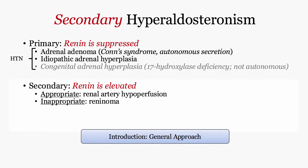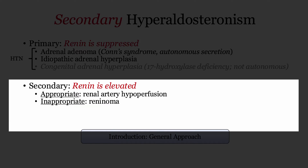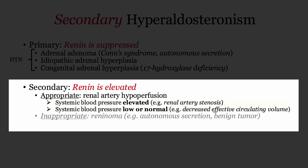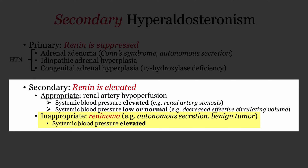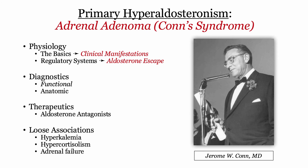Insofar as secondary etiologies, you can distinguish the two by considering whether the renin secretion is appropriate or inappropriate. Appropriate refers to renin release that occurs secondary to renal hypoperfusion, as in renal artery stenosis, or decreased effective circulating volume, and these are distinguished by blood pressure levels. Rounding out the list, a rare renin-secreting tumor of the juxtaglomerular cells, referred to as a reninoma, may present with manifestations of hyperaldosteronism. With that background, we can begin our discussion of primary hyperaldosteronism, focusing on the adrenal adenoma.